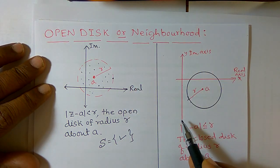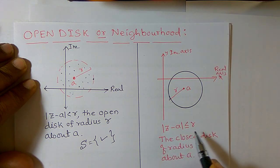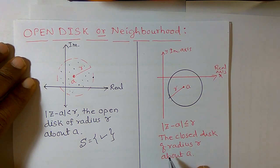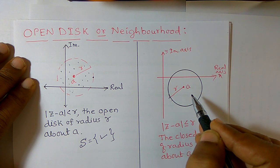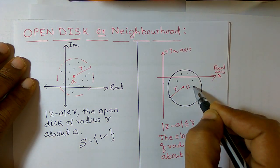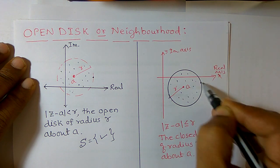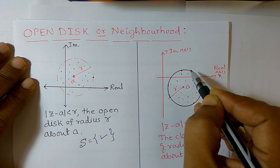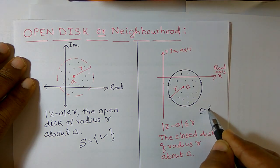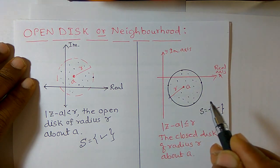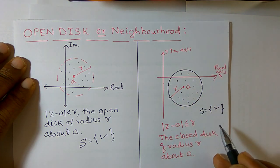This is also called a neighborhood. In a similar way, consider the inequality: modulus of z minus a is less than or equal to r. We call it the closed disk of radius r about a. Draw the circle with radius r centered at a. This circle contains many points, and now the set contains all the points inside the circle as well as the points on the circumference.